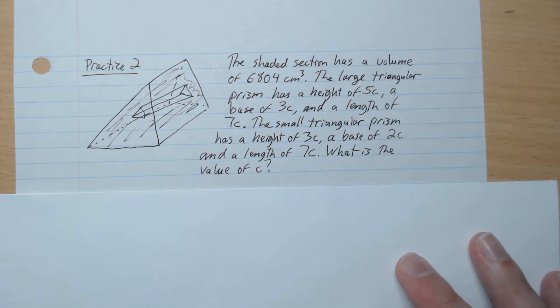The large triangular prism has a height of 5c, base of 3c, length of 7c. The small triangular prism has a height of 3c, base of 2c, and a length of 7c. What is the value of c? So go ahead and pause the video and answer this question.